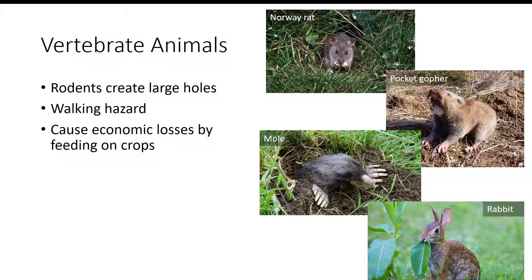Vertebrate animals that inhabit the edaphic environment are small animals such as rats, mice, gophers, chipmunks, moles, and rabbits. Although the holes produced by these animals can increase soil drainage, these holes are generally too big and unsightly. Turf that the rodents have burrowed under also presents a hazard to people walking on it. In addition, rodents cause heavy economic losses to the grower annually because when these rodents come out of their underground holes, they feed on crops and then retreat to their underground hiding place.